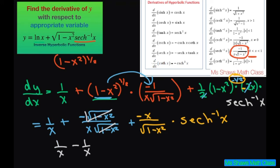And then this is going to be minus x divided by square root, 1 minus x squared, times inverse hyperbolic secant of x.